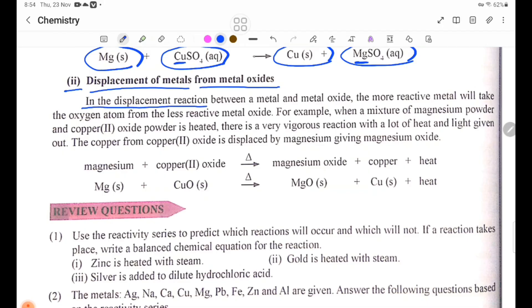In the displacement reaction between a metal and metal oxide, the more reactive metal will take the oxygen atom from the less reactive metal oxide. For example, when a mixture of magnesium powder and copper-2-oxide powder is heated, there is a very vigorous reaction with a lot of heat and light given out.